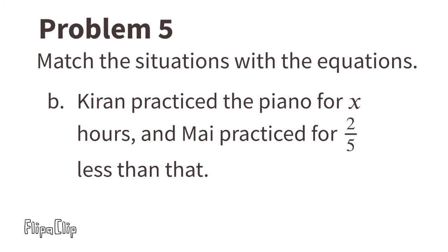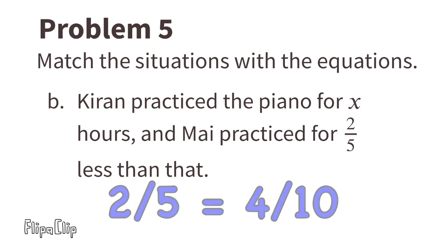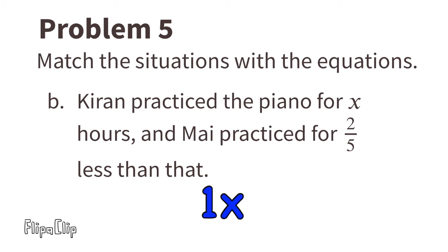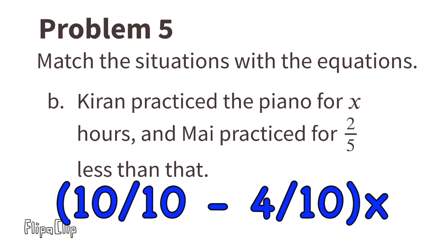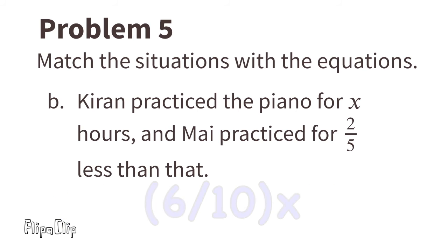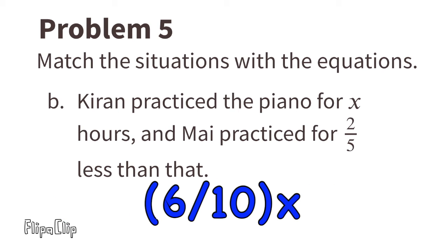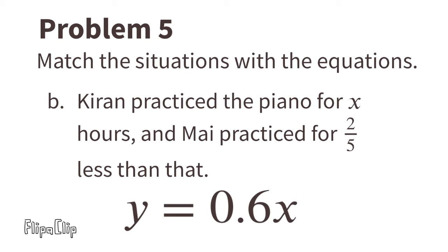Situation B: Kieran practiced the piano for x hours and Mai practiced for two fifths less than that. Since two fifths is equal to four tenths, we can look at this as ten tenths x minus four tenths, which equals six tenths. The matching equation is y equals six tenths x.